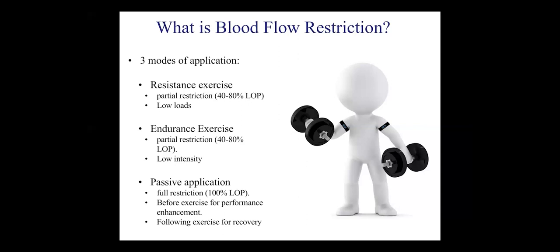Finally, we can also use blood flow restriction passively. This involves no exercise, but the pressures used are higher and equate to about 100 percent of your limb occlusive pressure. Typically this involves short two to five minute periods of full restriction followed by similar reperfusion periods. This method has been used to increase acute exercise performance and help recovery following strenuous exercise.